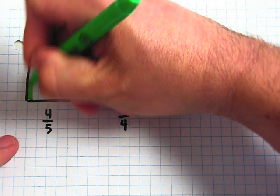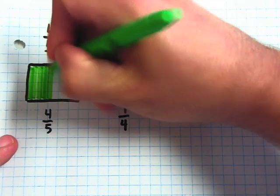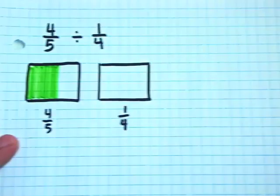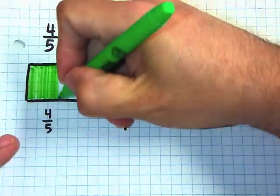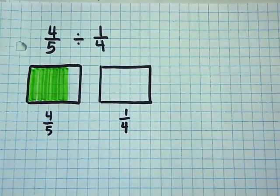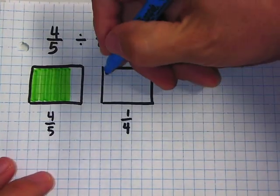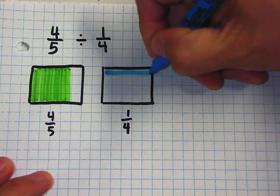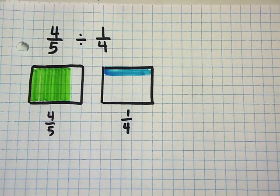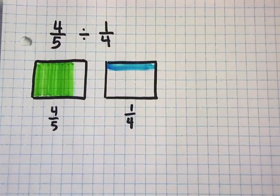I shade in four-fifths. I'm using a highlighter, perhaps a colored pencil would be better so you can see the lines better. So there I have four-fifths. Now on to my next one. I have one-fourth. Notice I'm going horizontally. And be careful here. If I would have shaded in vertically, that's not one-fourth. That would be one-fifth.